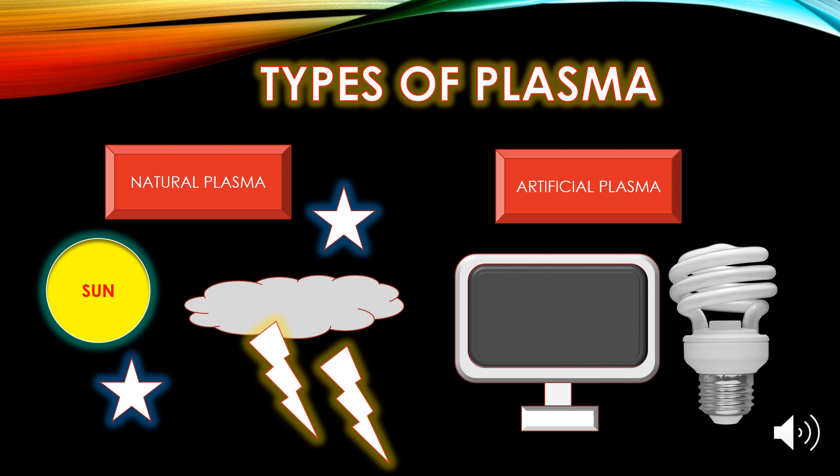There are two types of plasma: natural plasma and artificial plasma. Natural plasma exists only at very high temperatures — the minimum temperature for natural plasma is about 20,000 degrees Celsius. The sun, stars, space, lightning, and luminous clouds are examples of natural plasma. Artificial plasma can be created by electrical charges on a gas; examples include fluorescent lamps, neon signs, and LED screens.